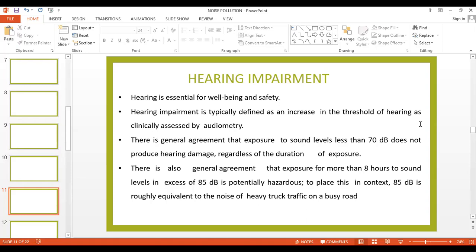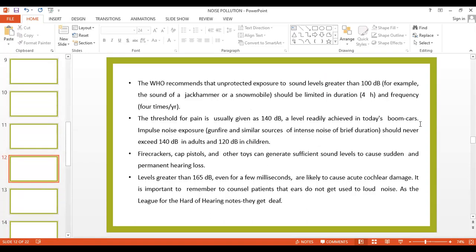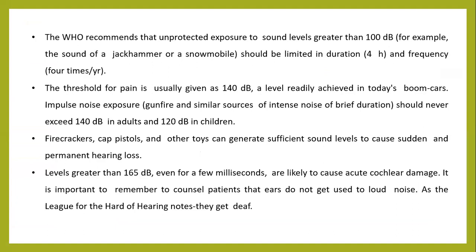To place this in context, 85 decibels is roughly equivalent to the noise of heavy truck traffic on a busy road. Sound levels of more than 70 decibels can produce hearing damage regardless of the direction of exposure. Hearing impairment is the most harmful effect due to noise pollution. Therefore, the WHO recommends that unprotected exposure to sound levels greater than 100 decibels — for example, the sound of jackhammers or snowmobiles — should be limited in duration, say four hours, and frequency, four times per year. The health threshold for pain is usually given as 140 decibels.